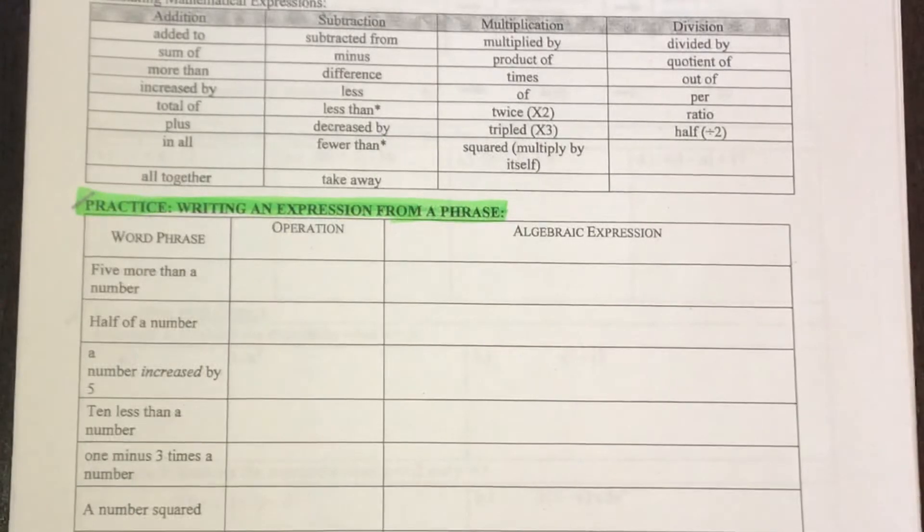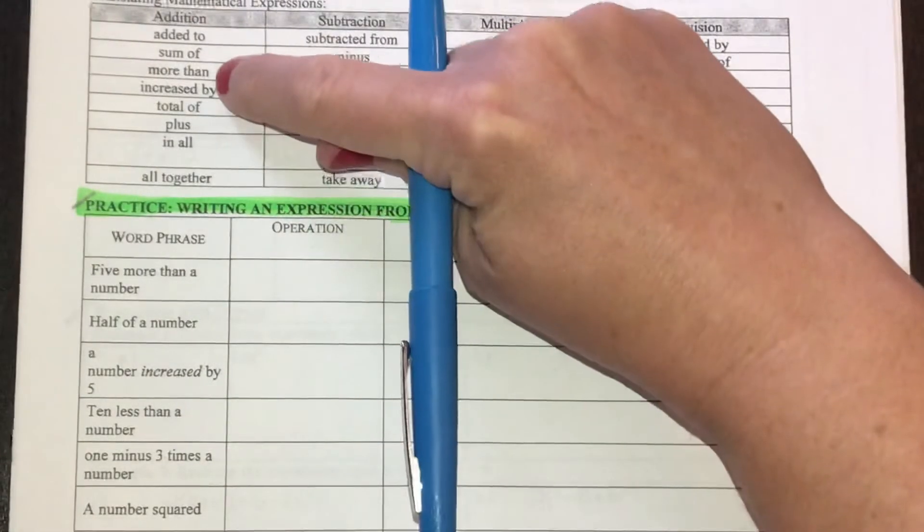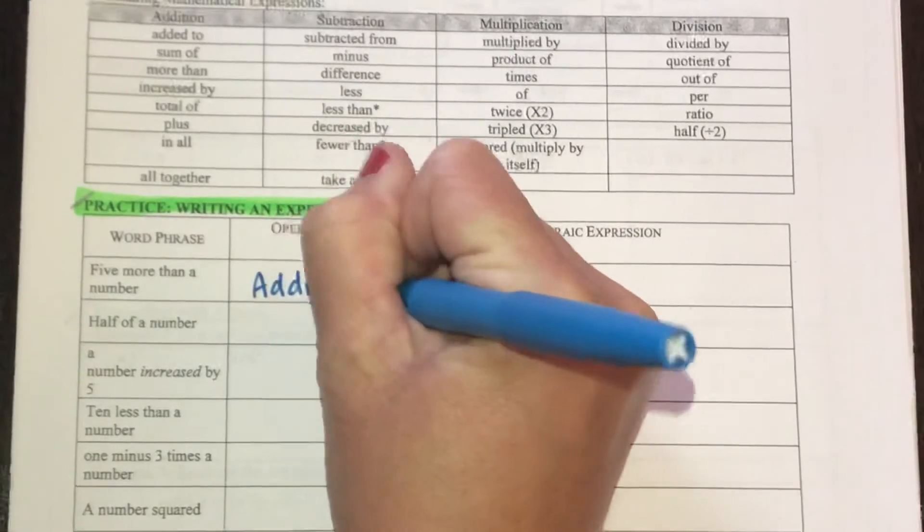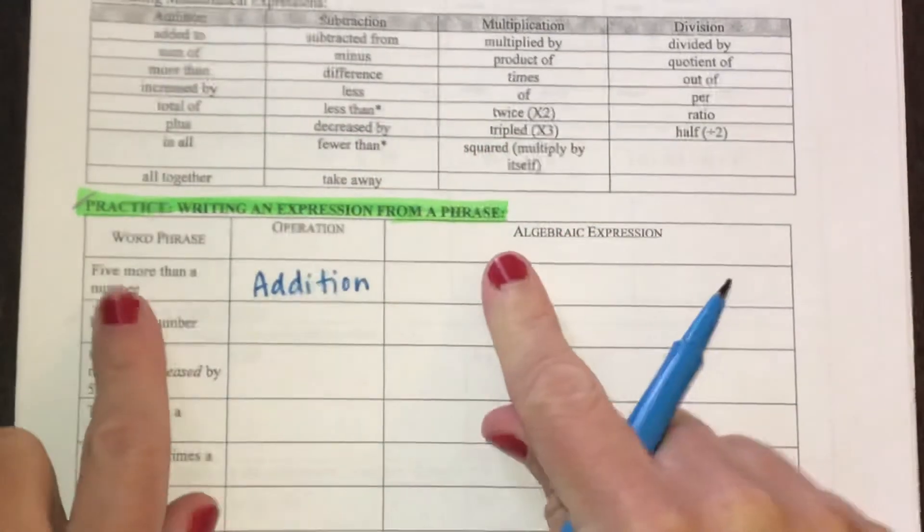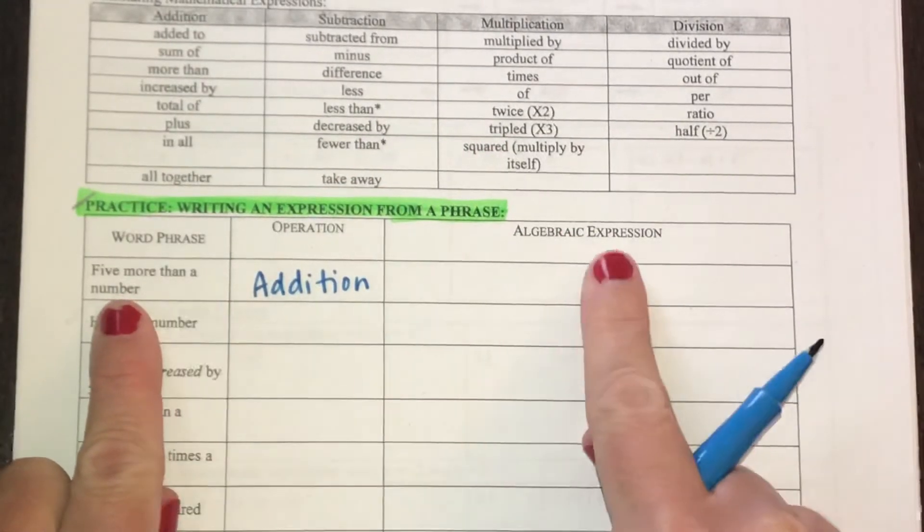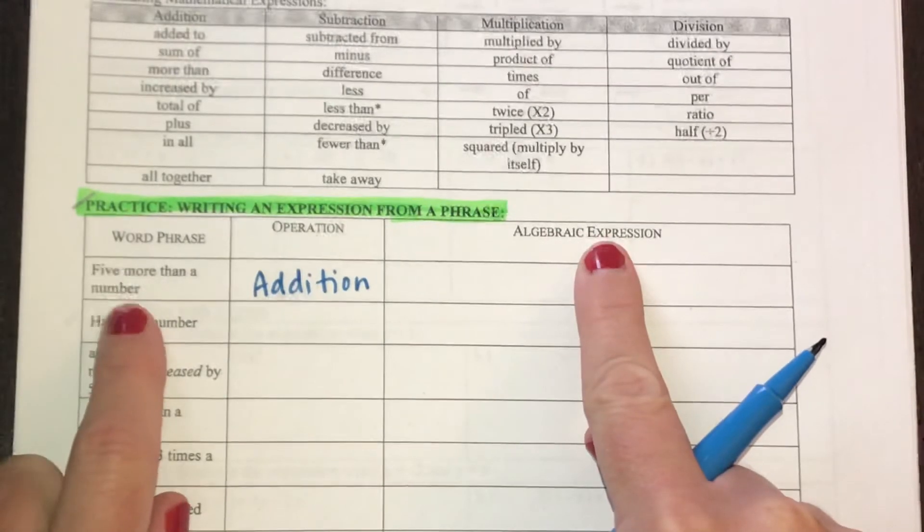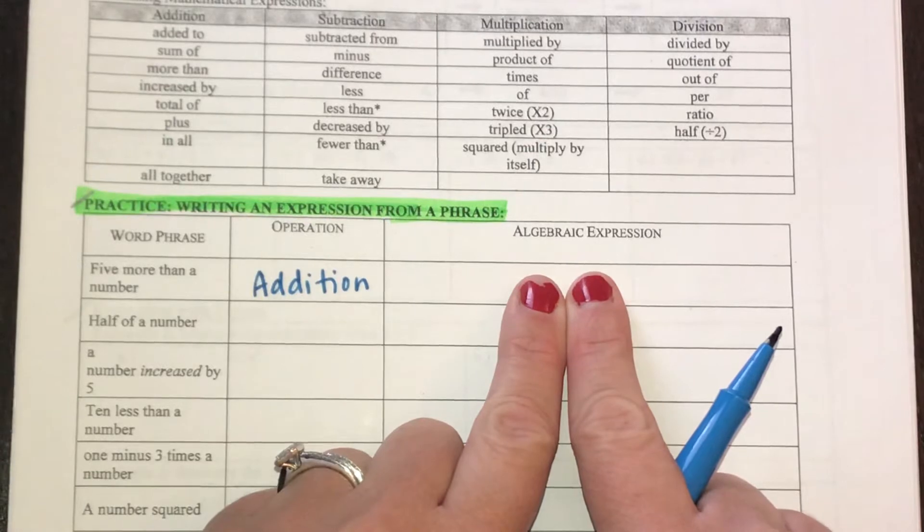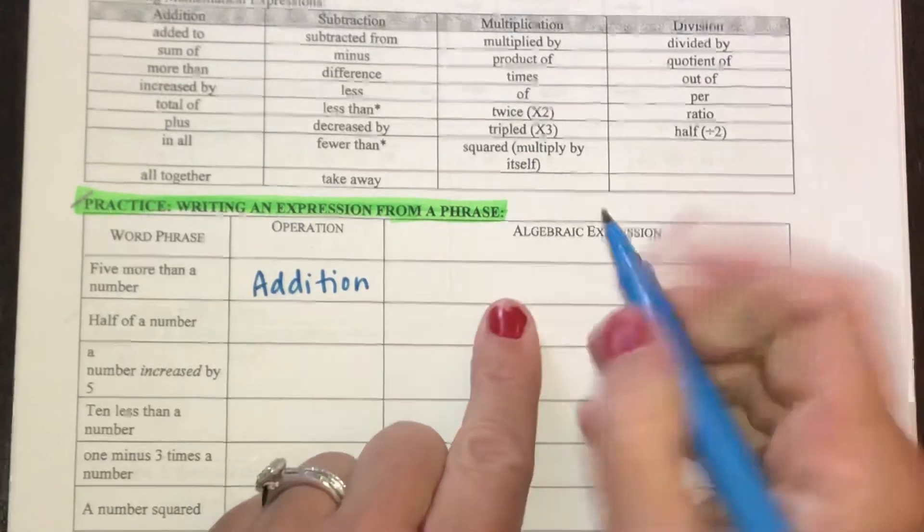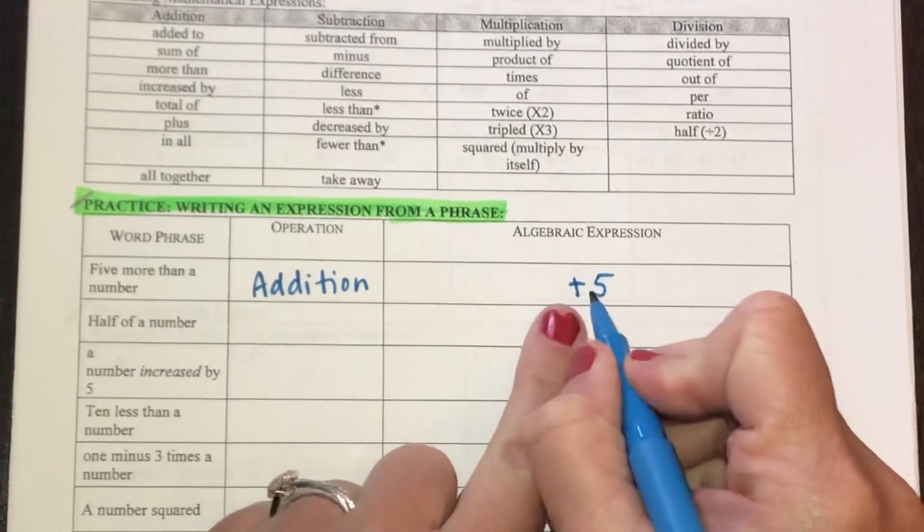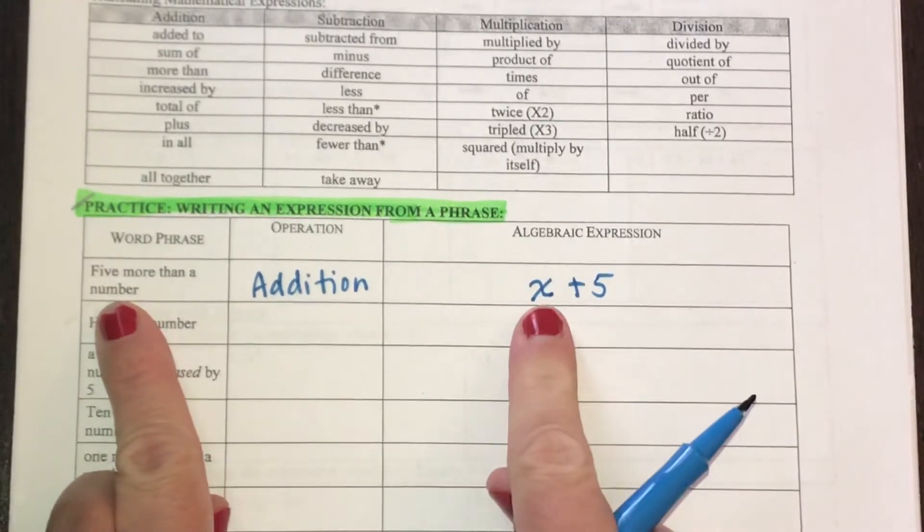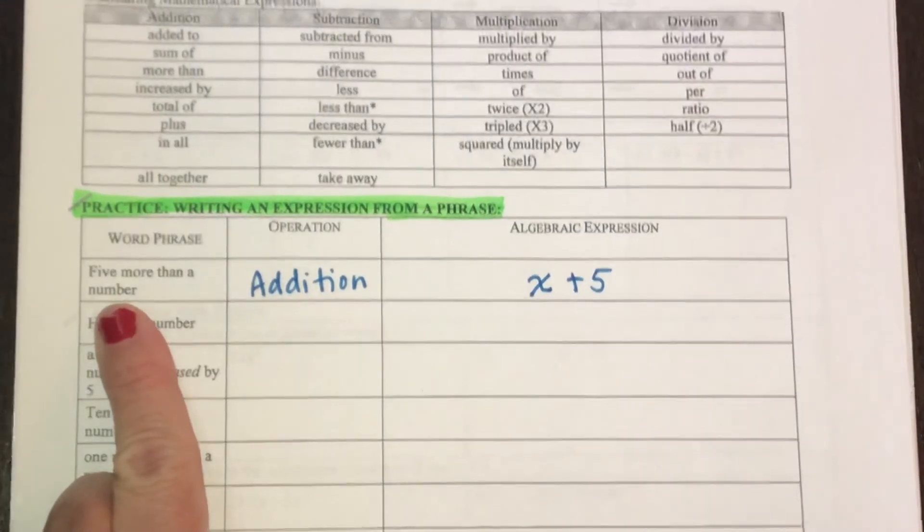Well, more than is right here, so that's going to be an addition operation. And my math phrase for five more than a number would be this kind of algebraic expression. Five more than a number, I'm going to add five more than the number. Well, I don't know what the number is, so I'm going to use a variable to express what that could be. So I'm going to use the letter X, and I'm probably just going to use X for all of these.